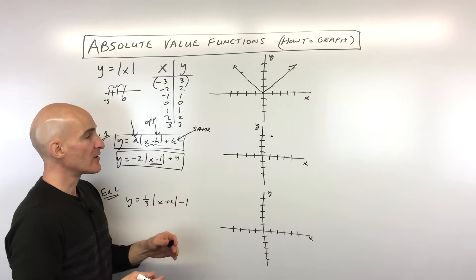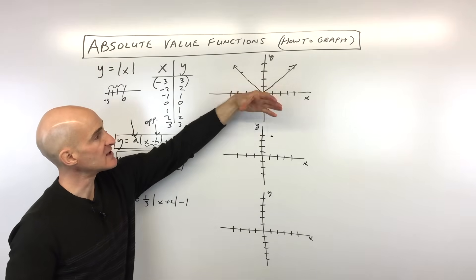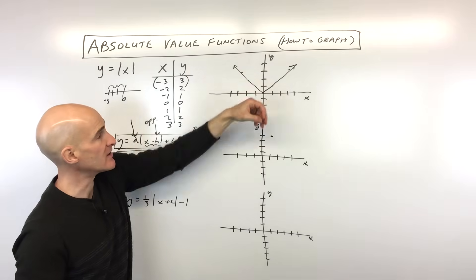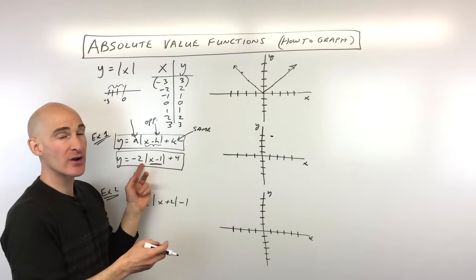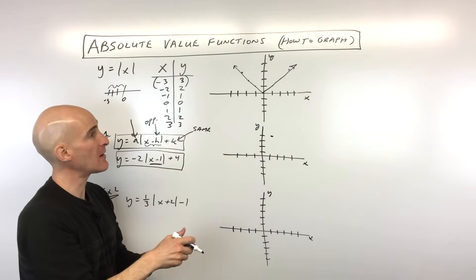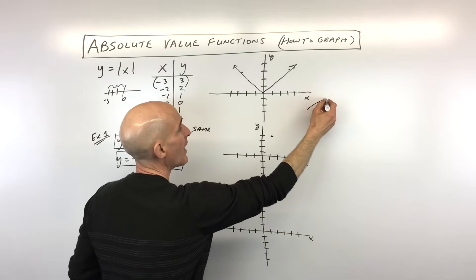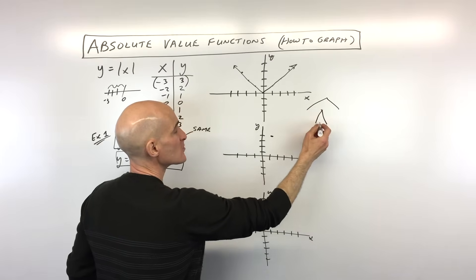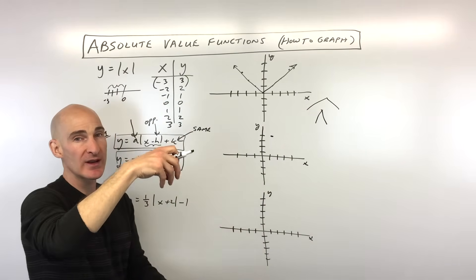Now, the negative 2, we talked about how the negative is going to reflect it over the x-axis. That means this graph is going to be opening down like this. And because this a value is greater than 1, the absolute value of that is greater than 1, it's going to be a vertical stretch. So what that means is this graph is going to actually be opening down. But it's going to be stretched, which means it's going to be narrower, it's going down faster.